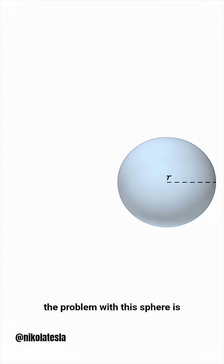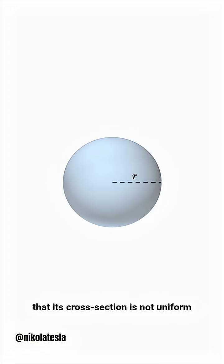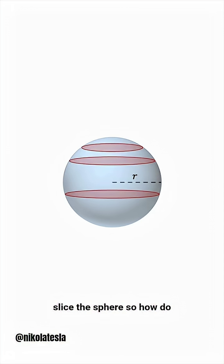But the problem with this sphere is that its cross-section is not uniform. You will always get a circular cross-section, but the size of the circle varies depending on where you slice the sphere. So, how do we solve this problem?